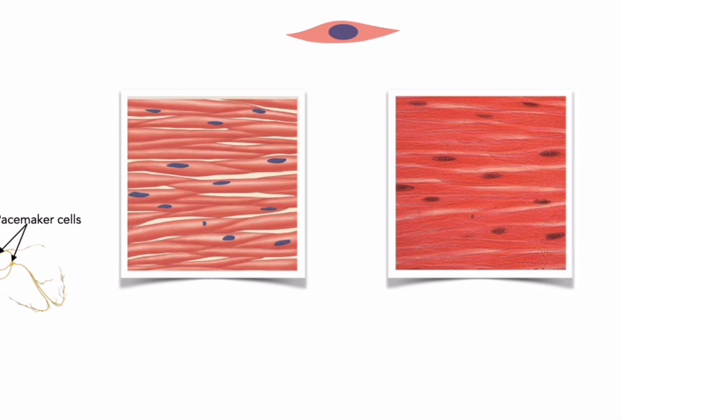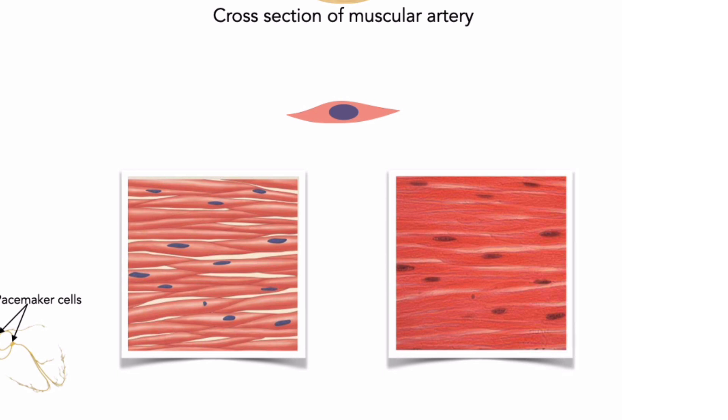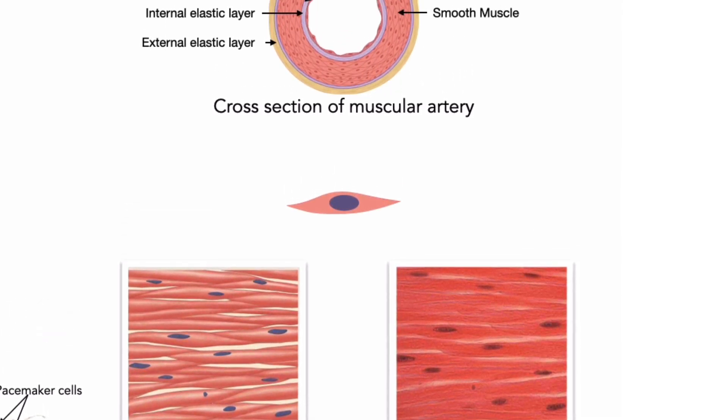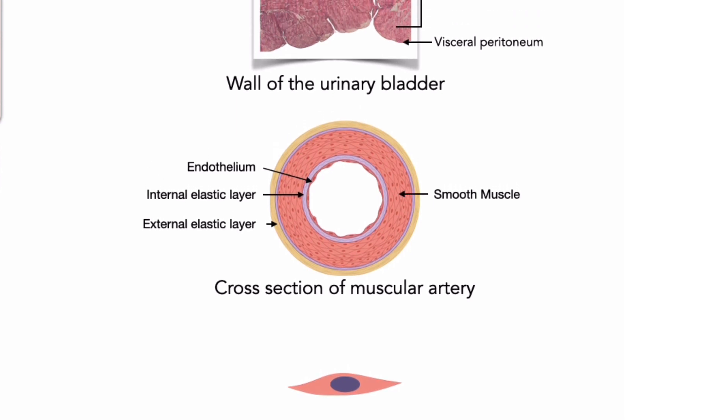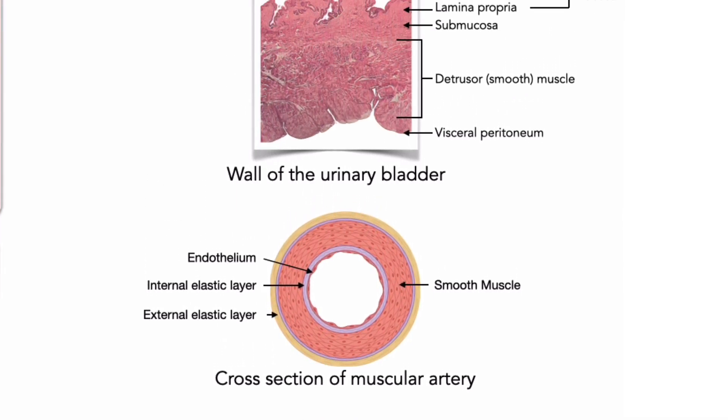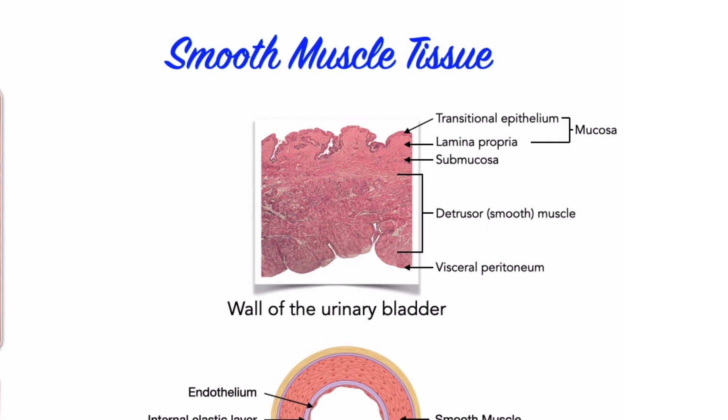Smooth muscle cells may contract on their own, or their contractions may be influenced by neural activity. However, the branch of the nervous system that regulates smooth muscle tissue is not under conscious control. Therefore, the nervous system usually does not provide voluntary control over smooth muscle contractions. So smooth muscle is known as non-striated involuntary muscle.